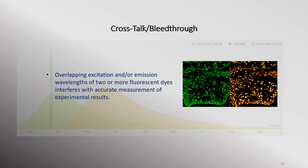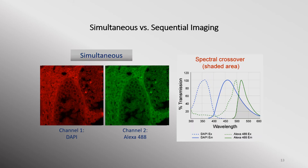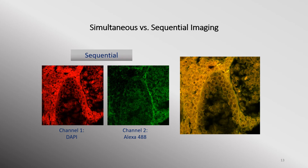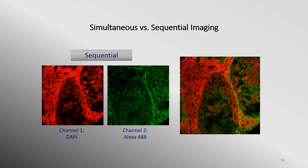Imaging with these labels diminishes the signal and interferes with the accurate measurement of experimental results. Acquiring images by the simultaneous excitation of double or triple labeled samples is a common practice, mainly because of the ease and speed of acquisition. However, bleed-through of fluorescent signals from one detector to another is common because of spectral crossover or crosstalk. To overcome this problem, image acquisition can be done sequentially. In this mode, each fluorophore is collected separately, so that there is minimal to no risk of obtaining a false positive signal in any other channel.